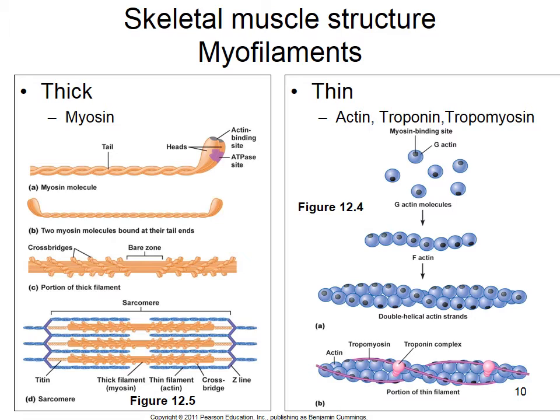Myofibrils come in two types: thick and thin. Thick myofilaments are made up of myosin. Two myosin molecules have a tail region, a neck region, and a head region. Their tail regions wrap together, and the head region has both an actin binding site and an ATPase site. Myosin can cleave the third phosphate group from ATP, and that exergonic reaction releases energy allowing myosin to move actin.